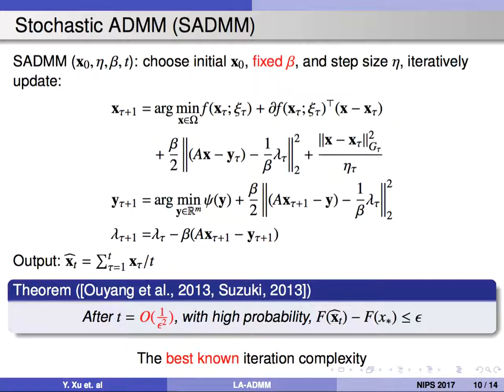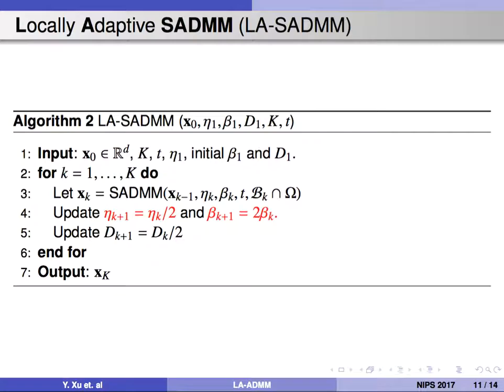It can achieve an iteration complexity of 1 over epsilon squared. Same thing, we proposed a new algorithm called LA-SADMM with adaptive scheme to update beta. It runs SADMM stage-wise and at each stage it increases beta and decreases step size.